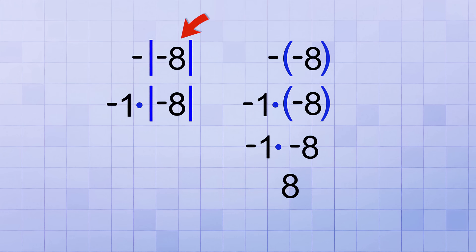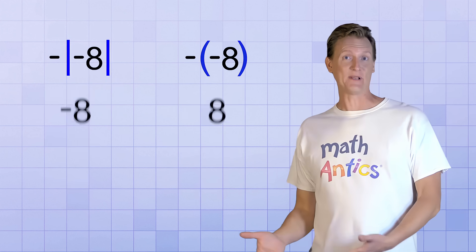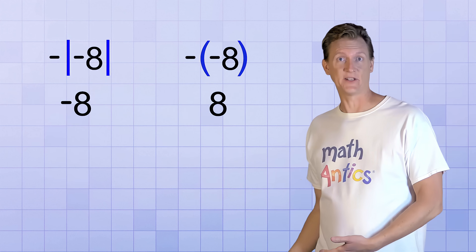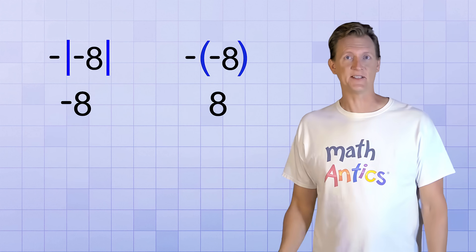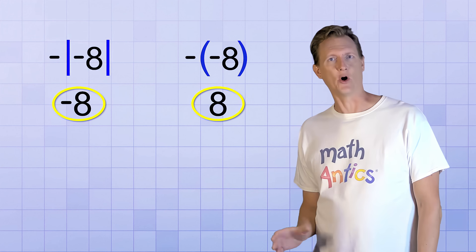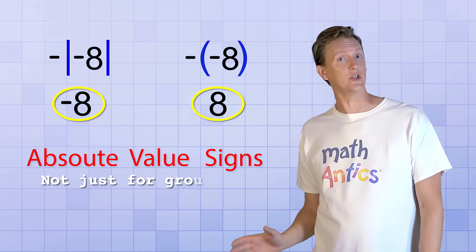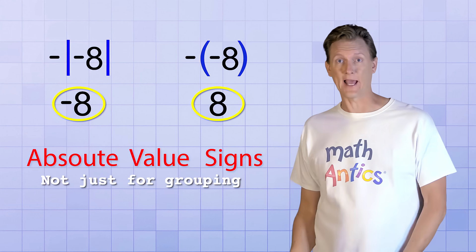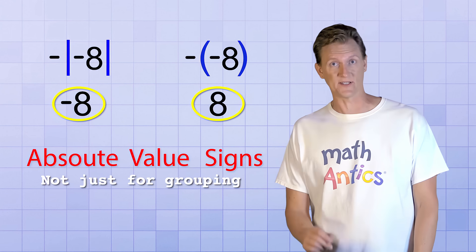But in the case of the absolute value signs, while they do function like groups, they aren't just for grouping like the parentheses are. They're also telling us to do something to whatever is inside of them. What are they telling us to do? They tell us to use the magnitude of the number inside, which would be positive 8. So in this expression, we multiply negative 1 times positive 8, which simplifies to negative 8. Do you see how it would be easy to confuse these examples on a test? They look similar at first glance, but they simplify to different answers. The key is to always remember that absolute value signs are not just there to group things. They're also asking you to find the absolute value of whatever number or expression is inside the group.